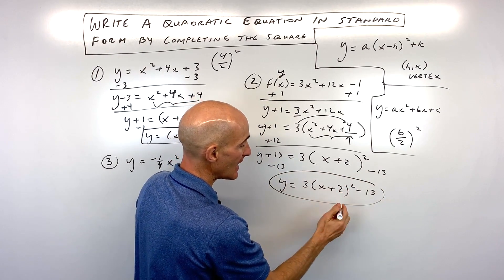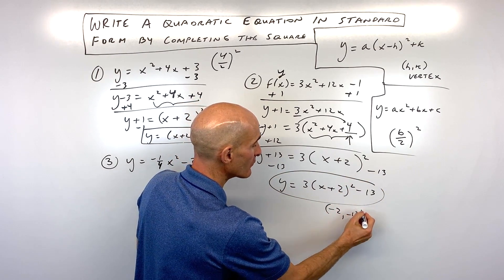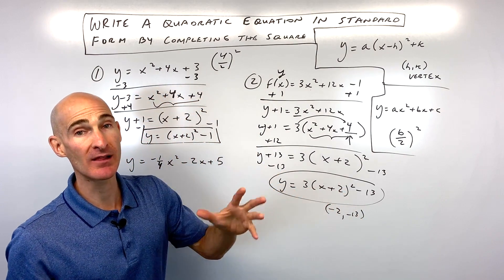And our vertex is going to be at negative 2, negative 13. Remember, this one in parentheses is the opposite sign. Okay, last example.